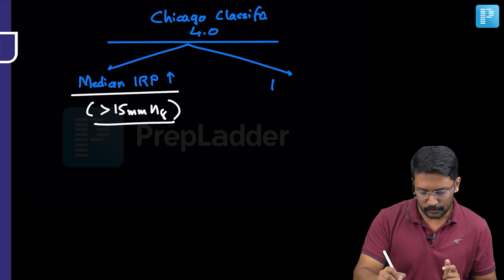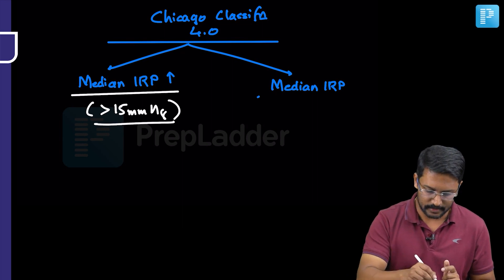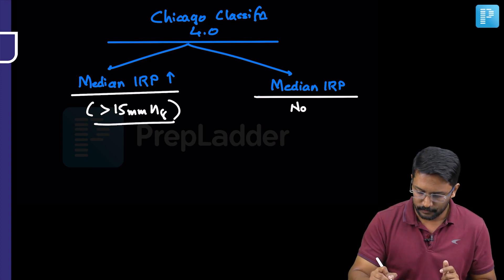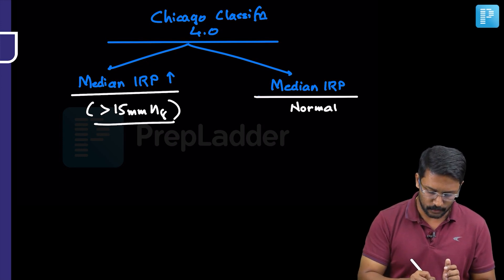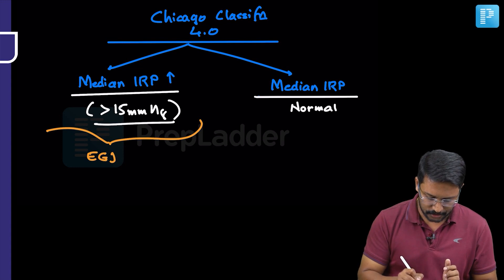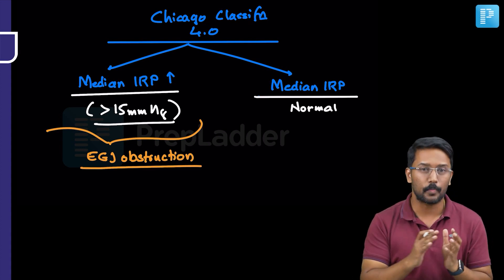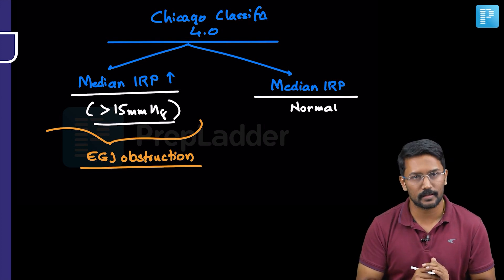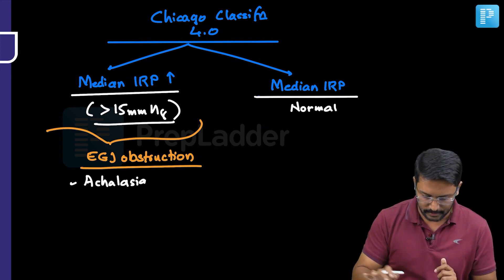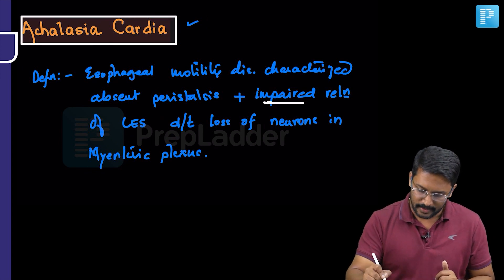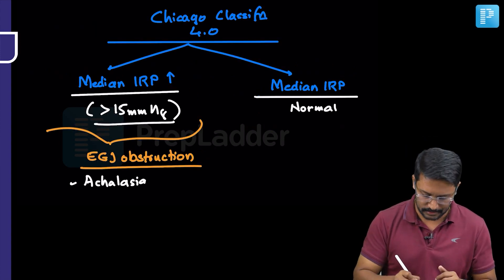In the second group, the median IRP is normal — not elevated, staying less than 15 millimeters of mercury. The conditions where the median IRP is elevated can be called disorders of esophagogastric junction obstruction. The typical example here is achalasia cardia, where there is impaired relaxation of the lower esophageal sphincter, which is why the median integrated relaxation pressure is elevated.